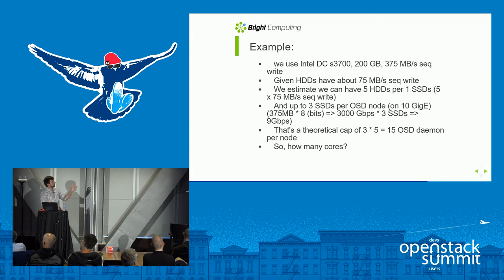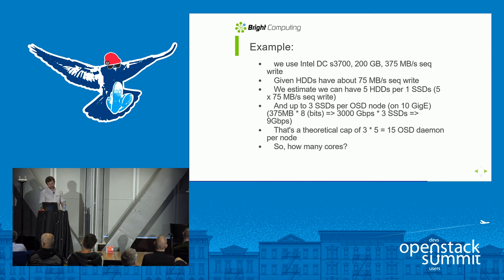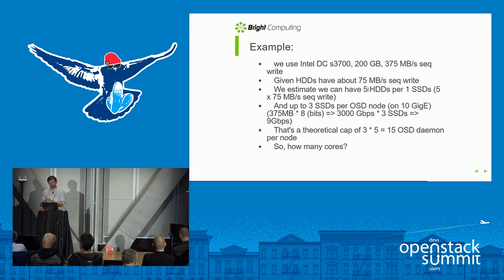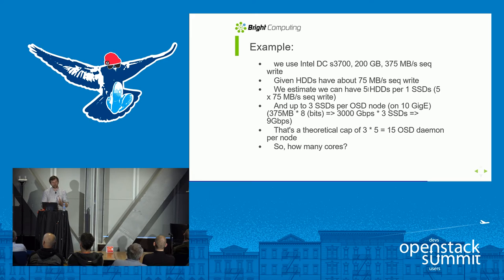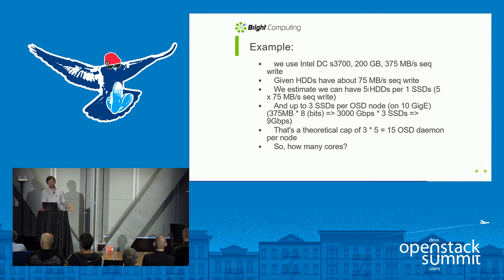Let's do a little math. Assuming a single journal SSD capable of approximately 375 MB/s, how many HDDs can you put behind it? It's equivalent to about five regular data-storing spinning drives behind a single SSD — in line with the common rule of thumb of four to six HDDs per SSD. Keep in mind that if your SSDs are faster, like PCIe NVMe drives capable of much higher sequential write speeds, you can put many more individual HDDs behind them.